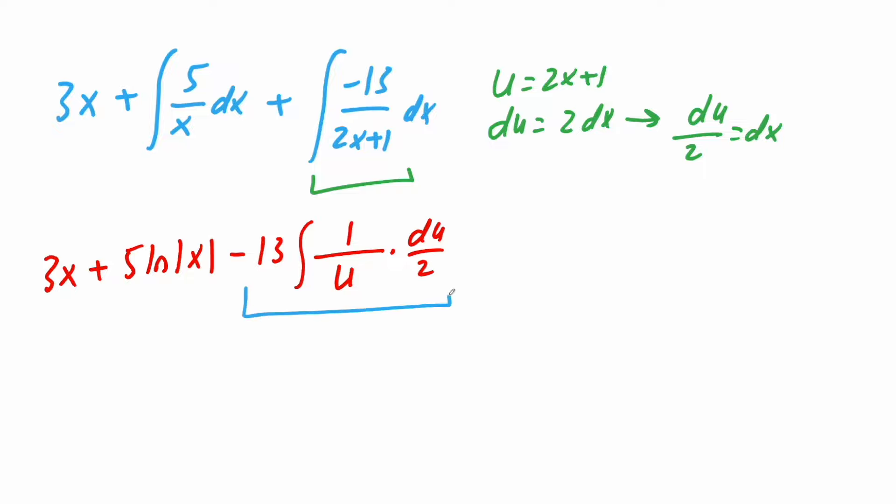So now just focusing on this piece. So this 2 we'll bring to the front. We're going to get negative 13 divided by 2. Now we have the integral of 1 divided by u, which we know is ln, the absolute value of u, plus c. Finally we can just swap.